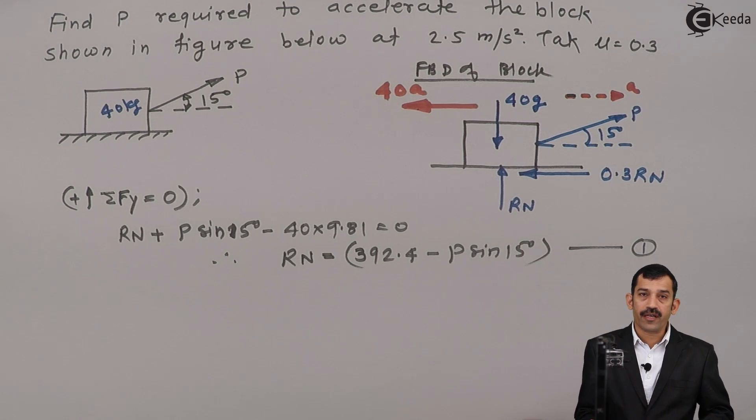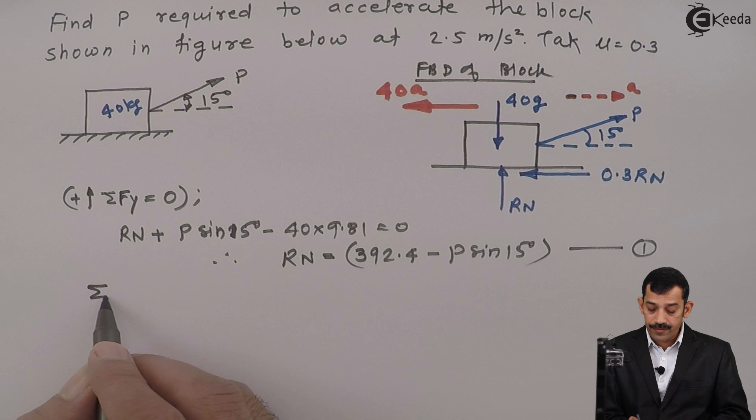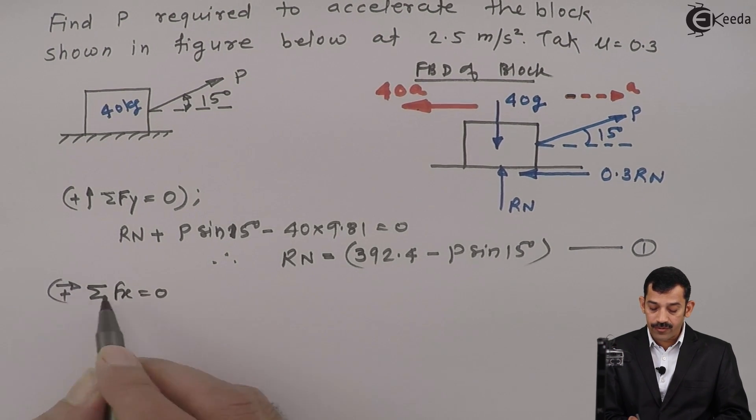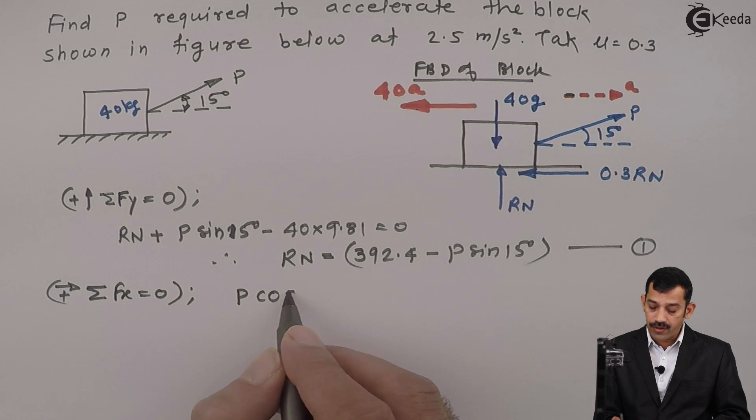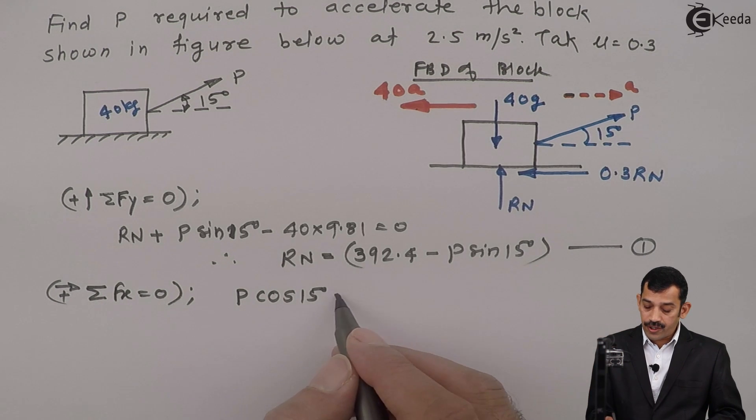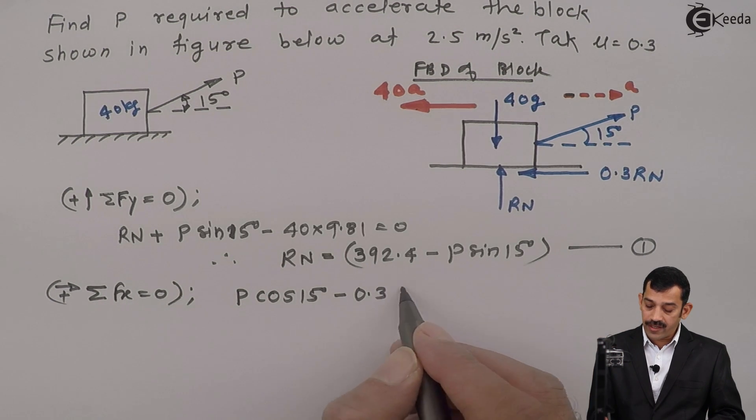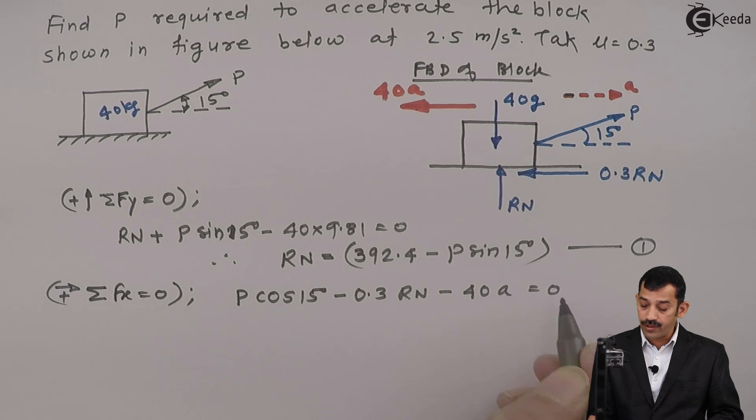Next we will apply the equation along the x-axis. Summation of Fx equals 0, assuming rightward force is positive. The component of P is P cos 15 degrees. This is the frictional force: minus 0.3 times Rn, and inertia force is 40 times A equals 0.